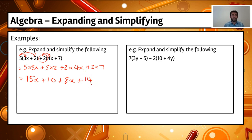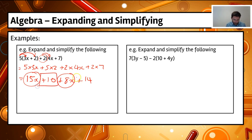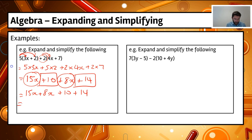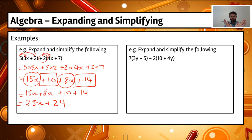I've got some like terms. 15x and plus 8x are like terms because they both have x's and the powers are the same. And the numbers, plus 10 and plus 14, are also like terms. So bringing them together: 15x plus 8x plus 10 plus 14, and that equals 23x plus 24. We've started with a large expression and simplified it — think of it like a funnel, bringing the larger expression down into its simplest form.